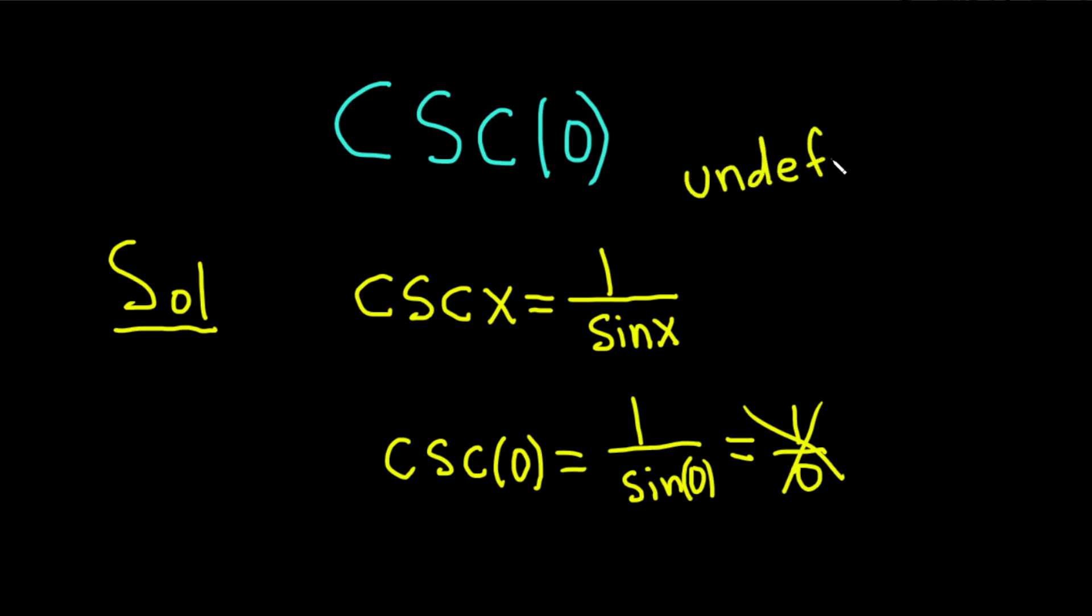So the cosecant of 0 is undefined. Because if you try to compute it, you end up with 1 over 0, and that is undefined.